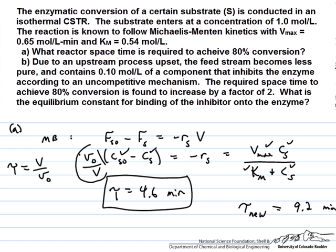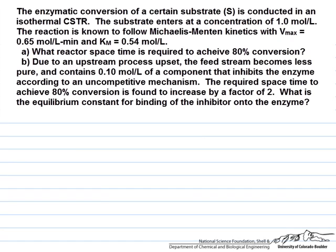Okay, so now a lot of features of this problem are going to stay the same. It's still 80% conversion, so everything on the left hand side of our material balance is going to stay the same. This is just in minus out. The only thing that is going to change is our reciprocal space time—it's going to go from 1 divided by 4.6 minutes to 1 divided by 9.2 minutes. The right side of the equation is going to change because the kinetics will be Michaelis-Menten type form but with uncompetitive inhibition also in the form of the rate law.